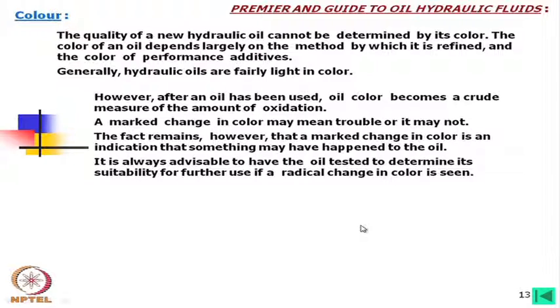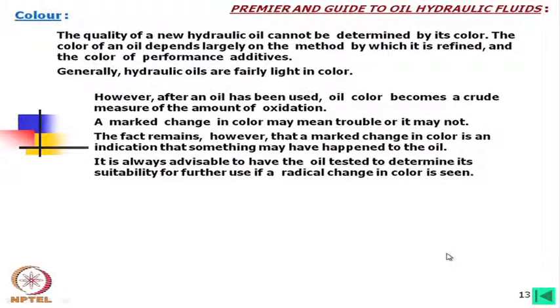A radical change in color — for example, the oil becoming very dark suddenly after a few days — may indicate failure in the oil or excessive friction or burning at some point in a component. This gives an indication that something is wrong in the system, not just in the oil. Developing the expertise to guess the problem from oil color is a valuable skill.